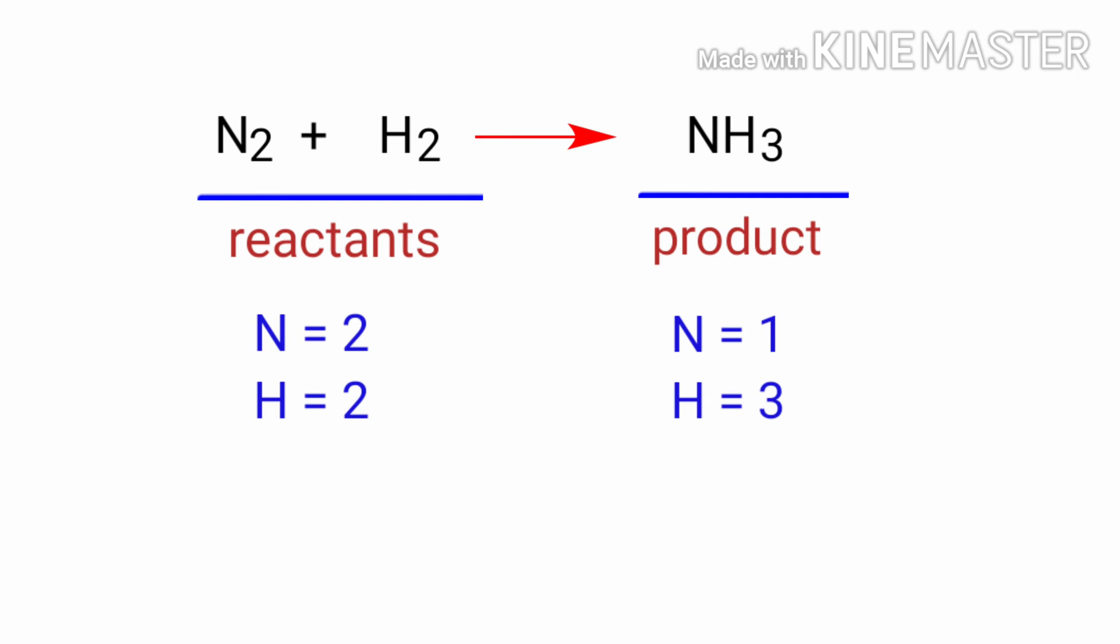On the reactants side, there are 2 Nitrogen atoms and 2 Hydrogen atoms. On the product side, there is 1 Nitrogen atom and 3 Hydrogen atoms.